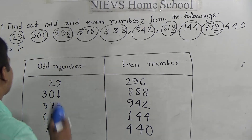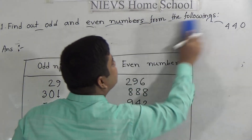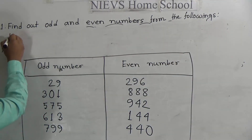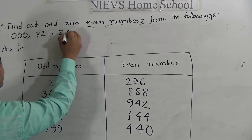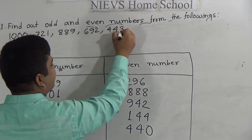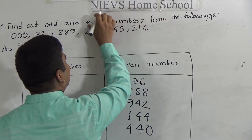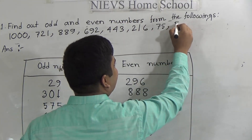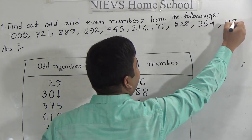Next, we shall solve the last question. The numbers given are: 1000, 721, 889, 692, 443, 216, 75, 528, 354, and 117. Make a new box with an odd number column and an even number column.